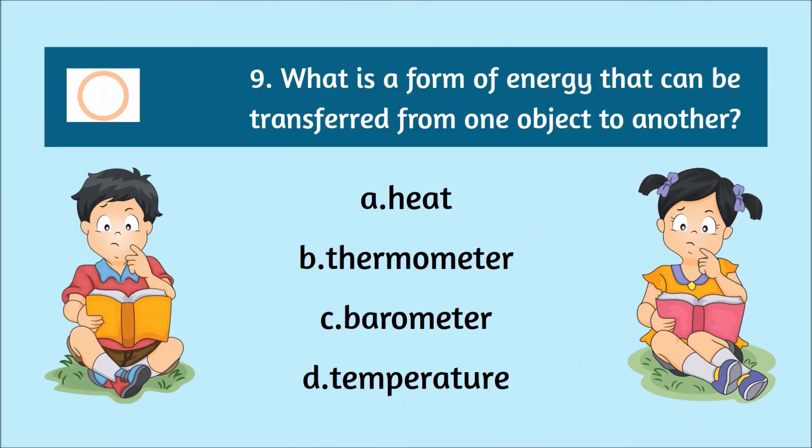Number 9. What is a form of energy that can be transferred from one object to another? A. Heat. B. Thermometer. C. Barometer. D. Temperature.